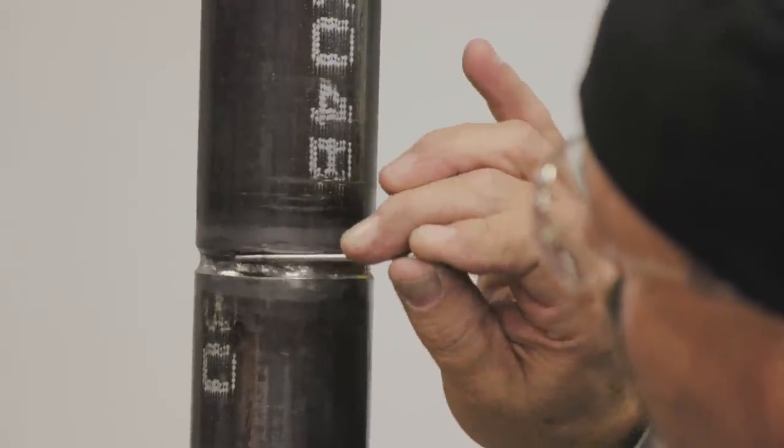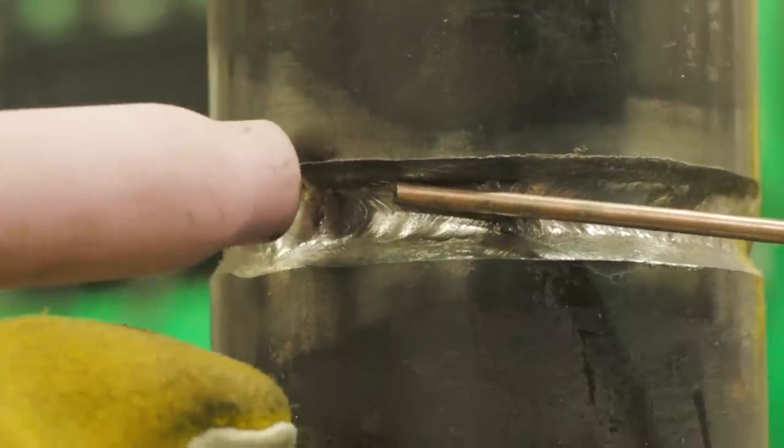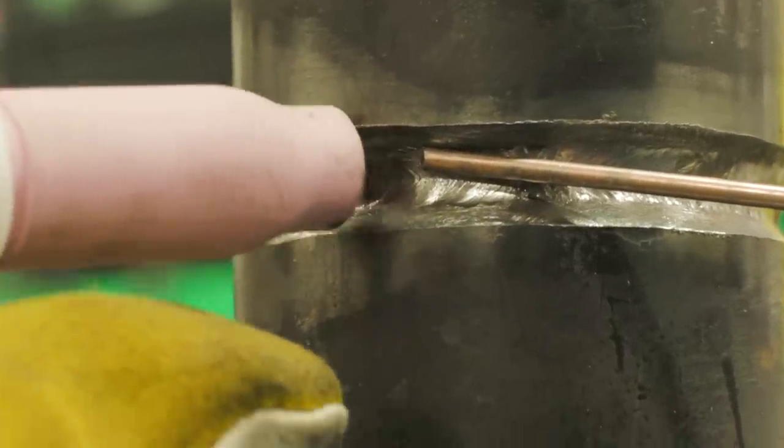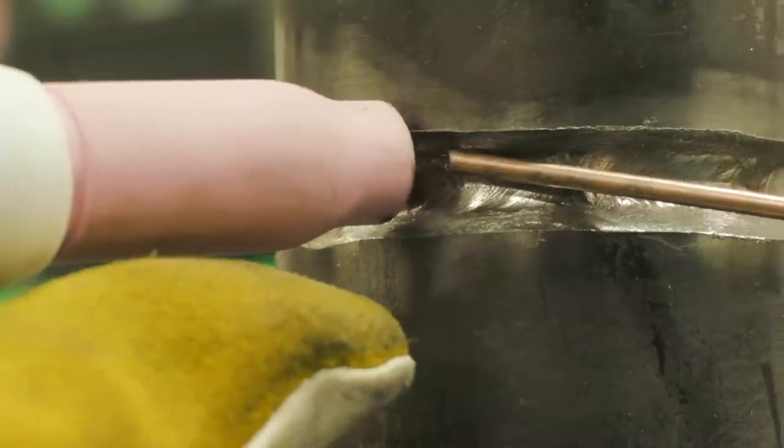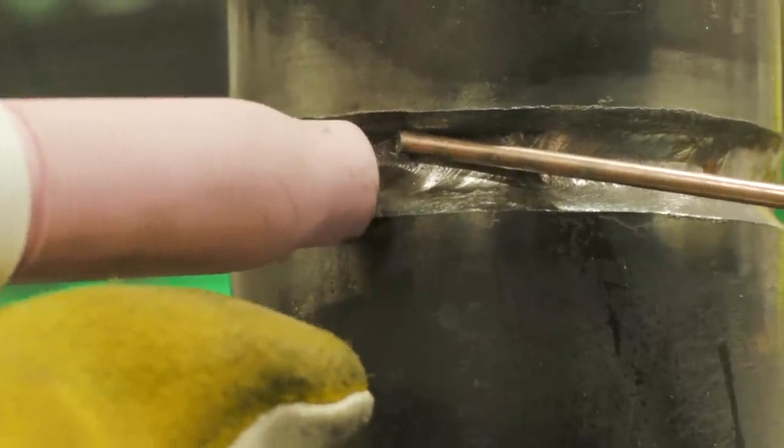I'll leave the filler wire on the top part of the bevel in the groove. I will also make my tungsten go kinda in a diagonal. To me, what that does is, it makes my weld pool kinda stay at the top.